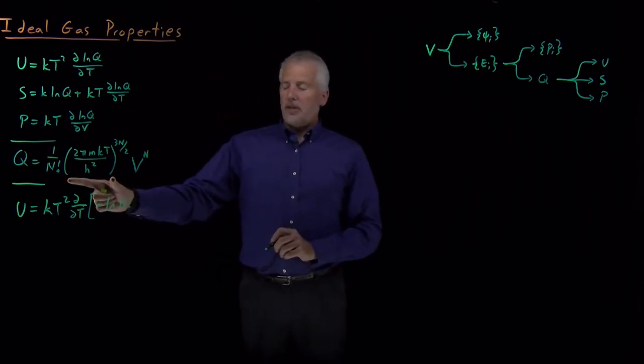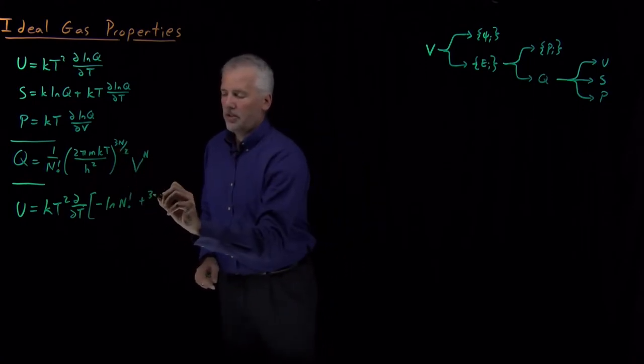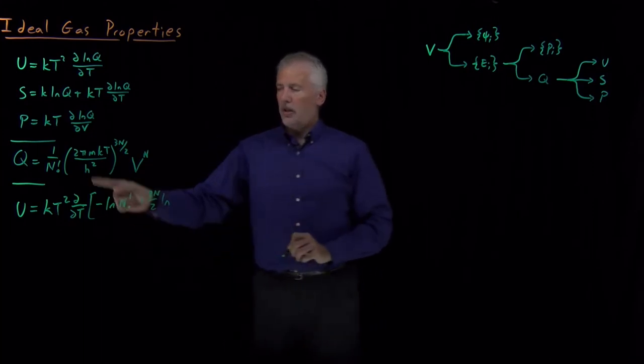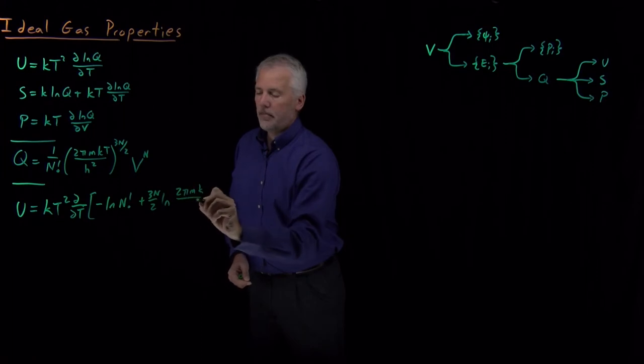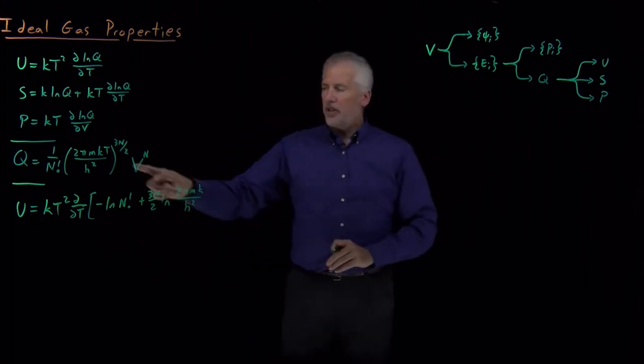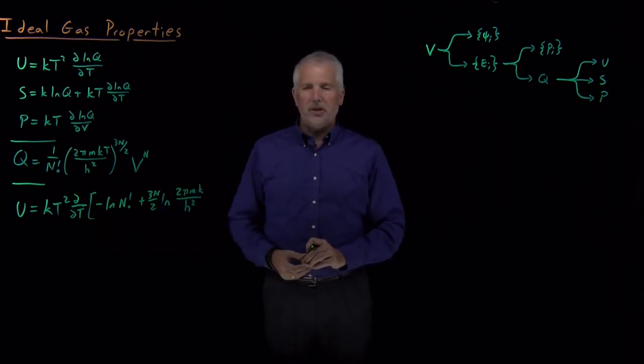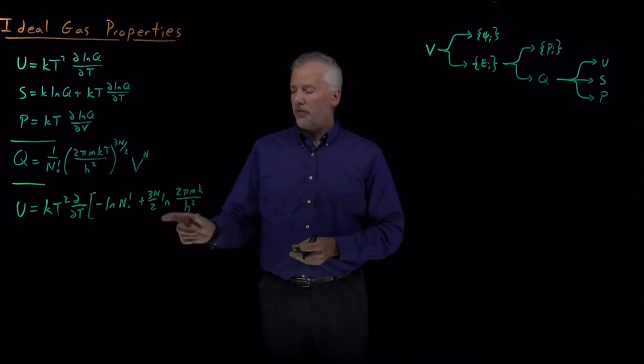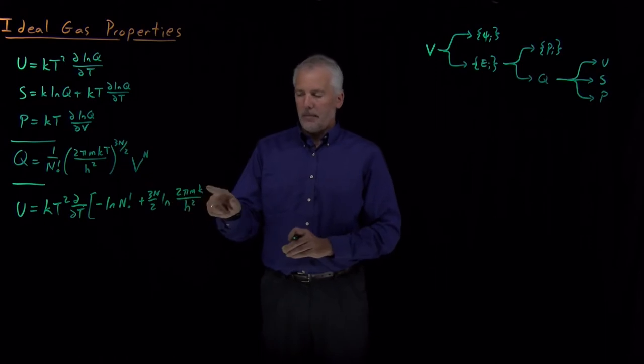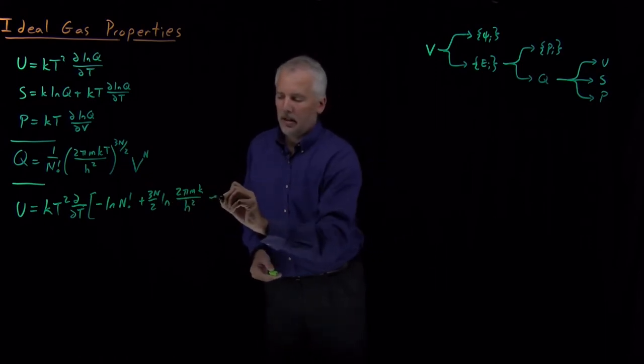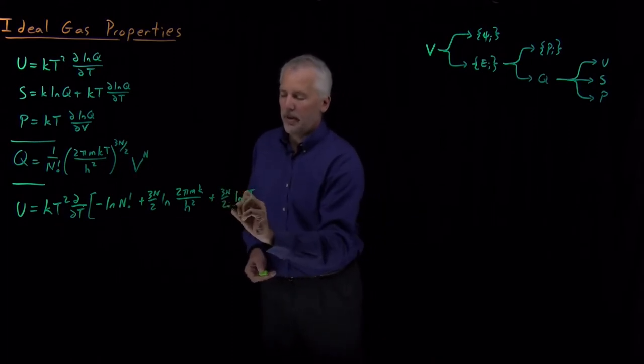I've got, for this parenthesis term, I've got log of this term to the 3n over 2. That's just the same as 3n over 2 times the log of the term in parentheses, 2 pi mk over h squared. And instead of including the t, I'm going to look ahead a step and recognize that since I'm taking the t derivative, it's going to be nicer if my t is separated from the other variables a little bit. So I'll further break down log of 2 pi mk t over h squared into log of 2 pi mk over h squared and log of t, and that t is also still multiplied by 3n over 2.